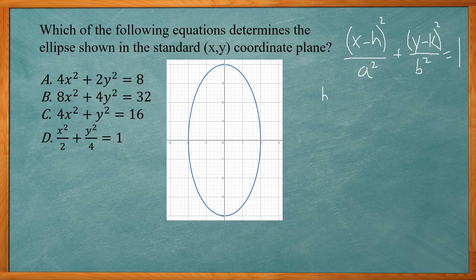Alright, so where (h,k) is the center of the ellipse, and a is equal to the radius in the x direction, and b is the radius in the y direction.